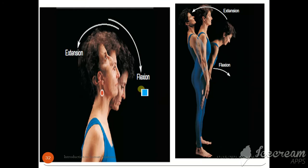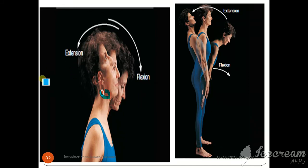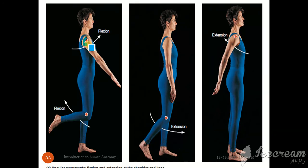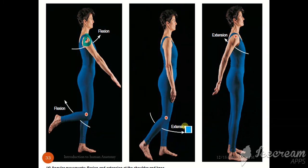To demonstrate with the neck at the joint area: when we flex forward, that is flexion. When we move back, that is extension. So flexion is the forward movement and extension is the backward movement. Moving from flexion back to the upright or extended position — that is extension.